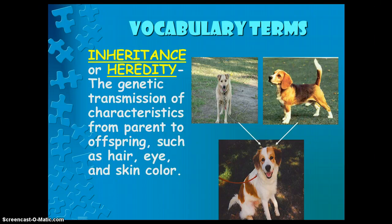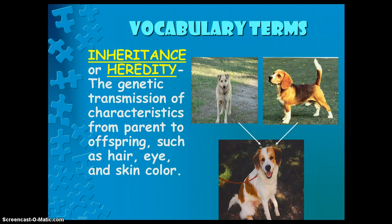One vocabulary term is inheritance or heredity. This is the genetic transmission of characteristics from parent to offspring, such as hair, eye, and skin color. You've probably heard things like 'you inherited that trait from your mom' or 'you inherited this trait from your dad.' There's a reason why offspring look like their parents — because we inherited their DNA, which was transmitted through the sex cells meeting.